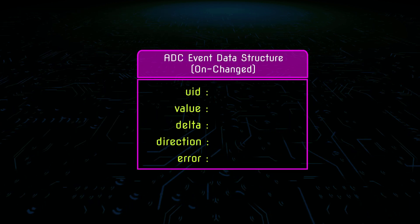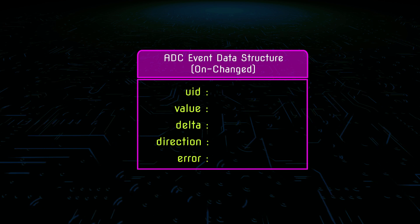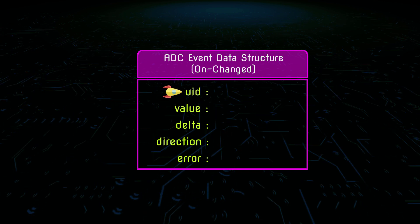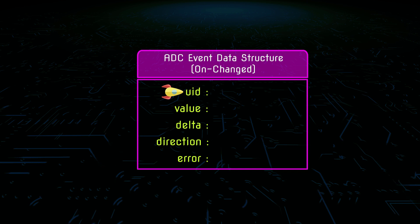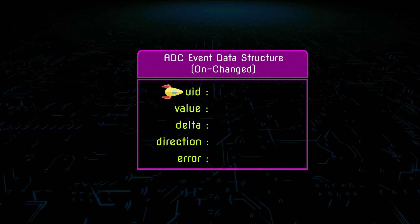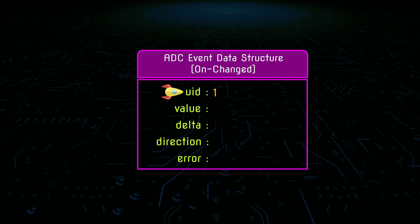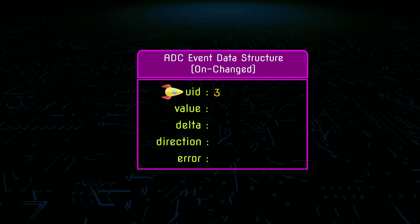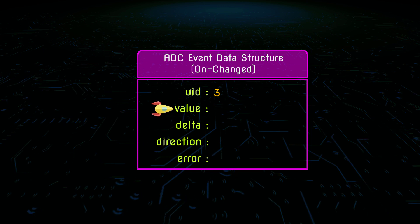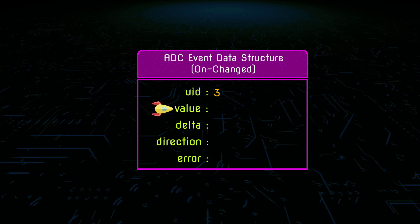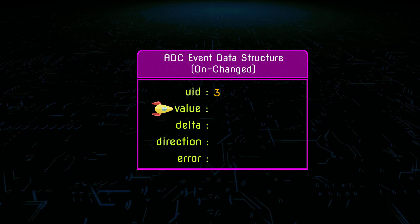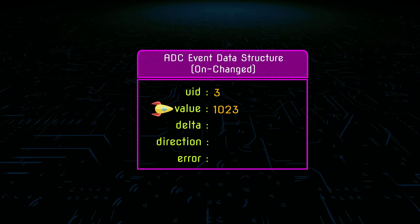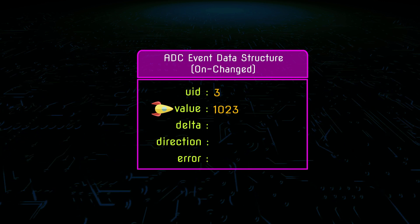Let's see the details of the onChanges event data structure. This data structure is composed of 5 key-value pairs. The first one is the UID, which represents the ID or channel of the ADC — it can be 0, 1, 2, or 3, because our system has 4 channels of the ADC. The second one is the value of the ADC, which is the 10-bit ADC value. The possible value can be 0 to 1023, where 0 represents 0V and 1023 represents 3.3V.